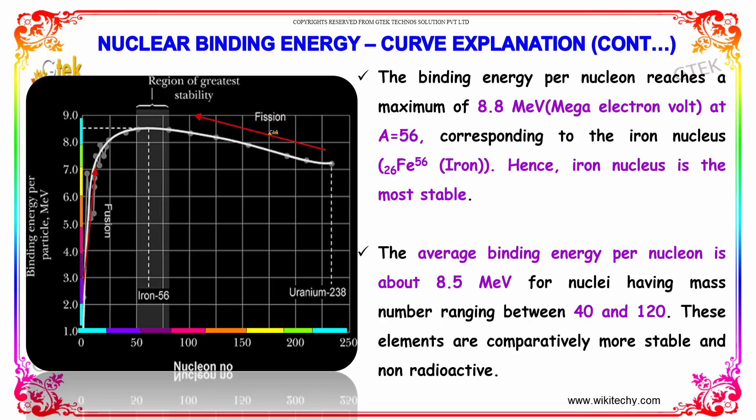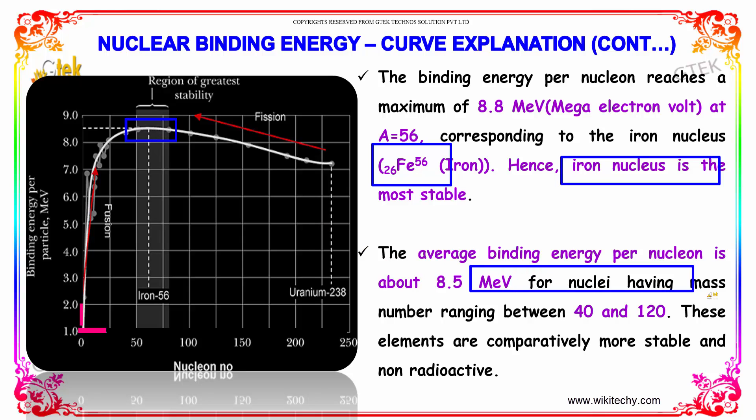The binding energy per nucleon reaches a maximum of 8.8 mega electron volt at A equals 56, which is iron. Hence, iron nucleus is the most stable. The average binding energy per nucleon is about 8.5 mega electron volt for nuclei having mass numbers ranging from 40 to 120. These elements are comparatively more stable and non-radioactive.